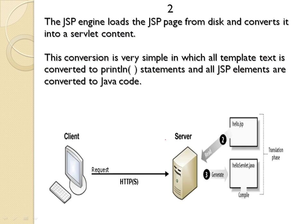After that, the JSP engine loads the JSP page from disk and converts it into servlet content. This is very important — every JSP page is going to be converted into a servlet first, and this is done by the JSP engine. As shown in the diagram, HelloJSP comes to the server, it is recognized as a JSP page, sent to the JSP engine, and converted to HelloServlet.java. This is a servlet page — the servlet source code is being generated. This specific phase is called the translation phase, meaning the JSP content is translated into Java code.